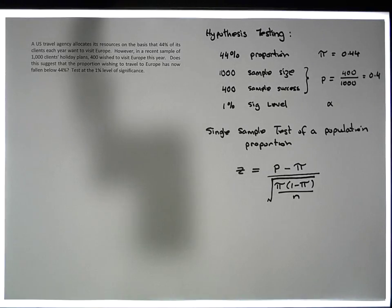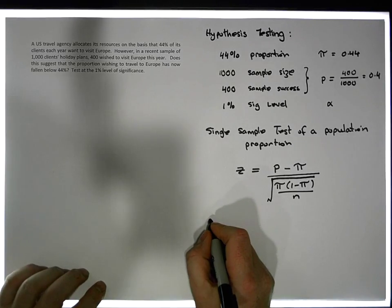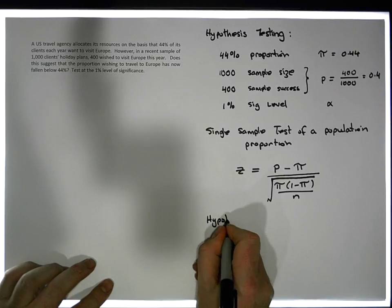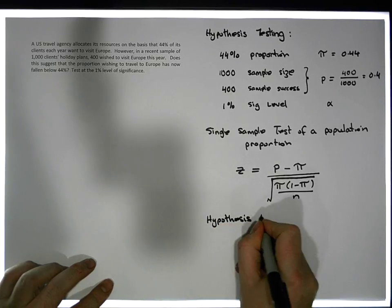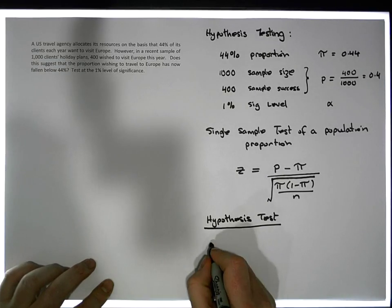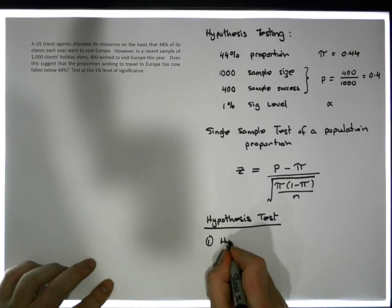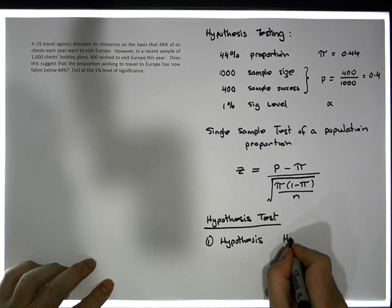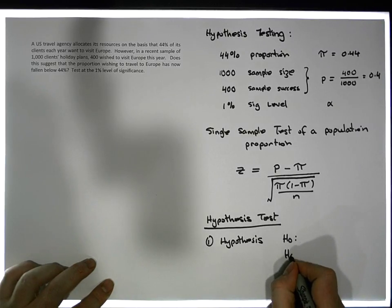So let's set up our hypothesis. Our hypothesis test has five steps. Step one is to define the hypothesis. And the hypothesis has two positions, it has a null position and it has an alternative position.